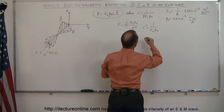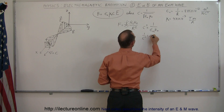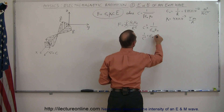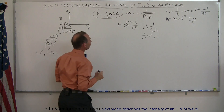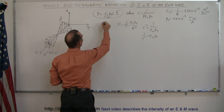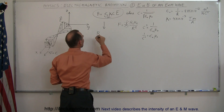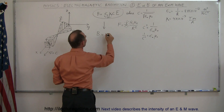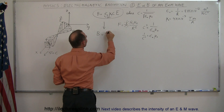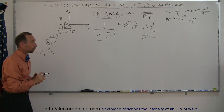Taking the inverse, 1 over c squared is equal to epsilon sub-naught times mu sub-naught. We can replace those two things in the equation with 1 over c squared, and rewrite it as: the magnetic field oscillations B in magnitude are equal to the electric field oscillations divided by c. That's a very good way of keeping track of the relationship between those two.